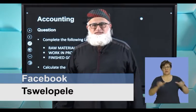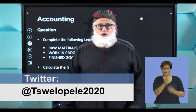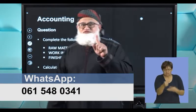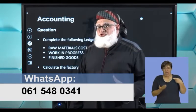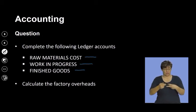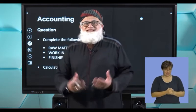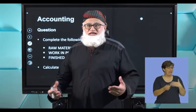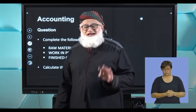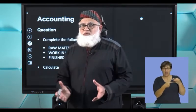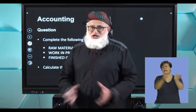Welcome back, accounting boffins. We're busy with cost accounting, looking at a particular question where you are expected to do certain things. What does this question want you to do? One, complete the following ledger accounts: your raw materials cost account, your work in progress, and your finished goods. These three accounts are critical — if you understand these three accounts, then the rest of it becomes as easy as chocolate cake.